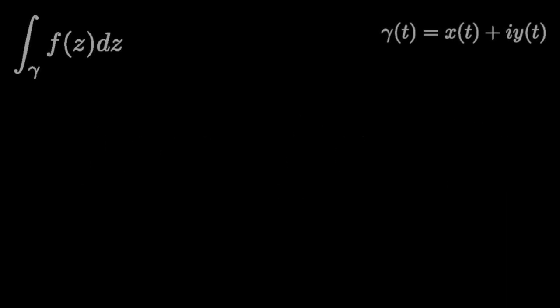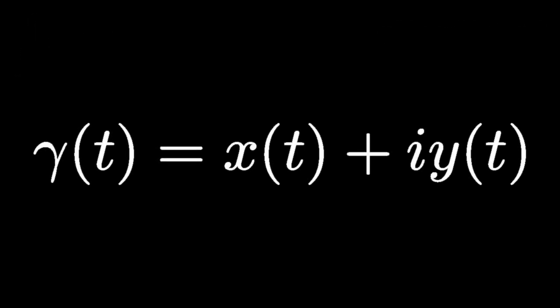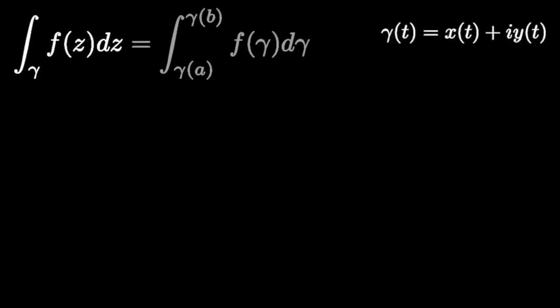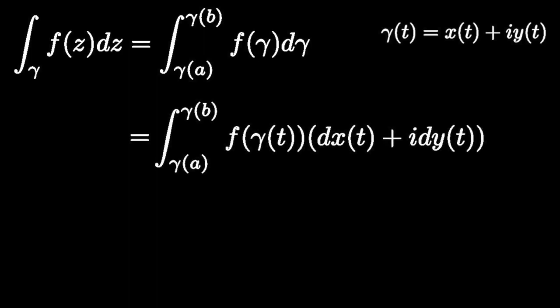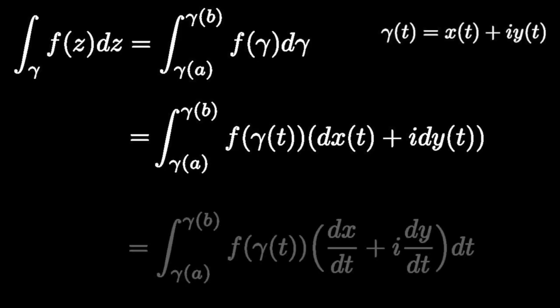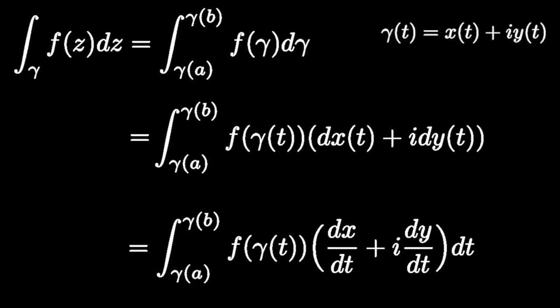Let's find out where this definition comes from. Given a parameterized curve equal to x of t plus i y of t, in order to capture the concept of integrating f along the curve, we form the composition of f with gamma, and take the integral of f gamma d gamma between gamma a and gamma b. Then, substituting the definition of gamma into the differential d gamma, we can change the integration over to a real integral, and cleaning everything up, we arrive at the original definition.